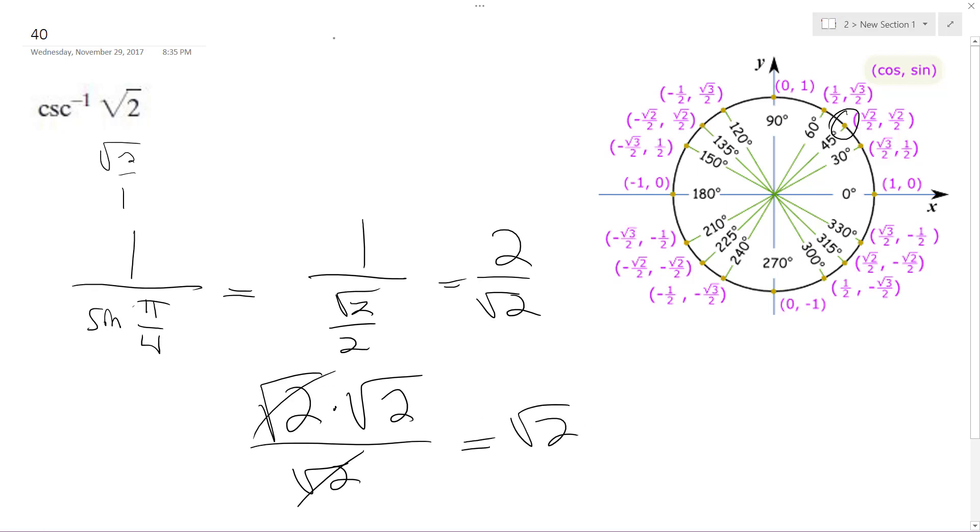So that proves that pi over four is the result when you take the inverse cosecant of the square root of two. All right, hope that helps.